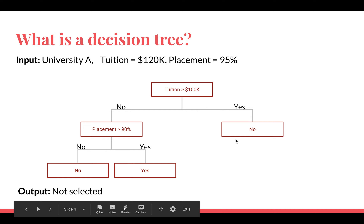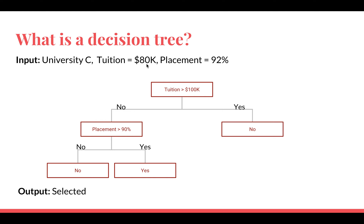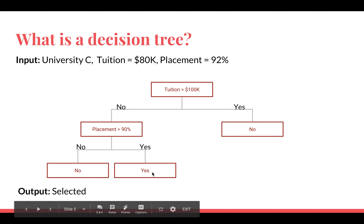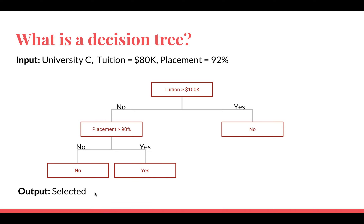Now for University C, the tuition fees are 80K and placement is 92%. Ram asks the same first question: is tuition fee greater than 100K? The answer is no because it is 80K. So he moves to the second question: is placement greater than 90%? Yes, it is 92%, so he goes in that direction and the output is that University C is selected. There could have been many more questions Ram could have asked, going step by step to get his final output.